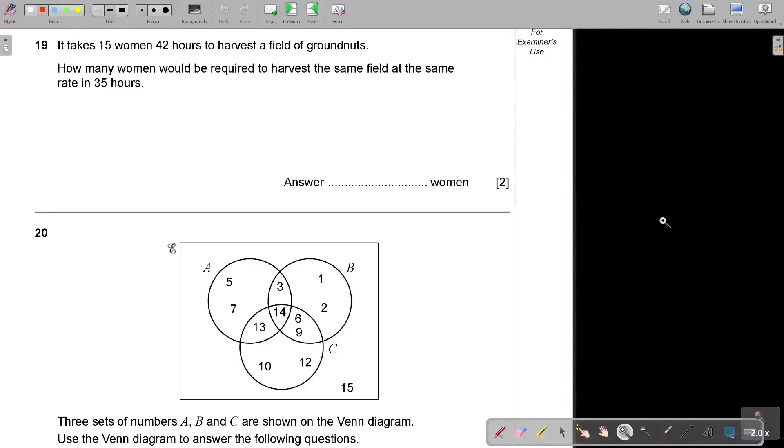Mathematics Ordinary Level Paper 1 2022 Part 3. Let's continue with question number 19. It takes 15 women 42 hours to harvest a field of groundnuts.